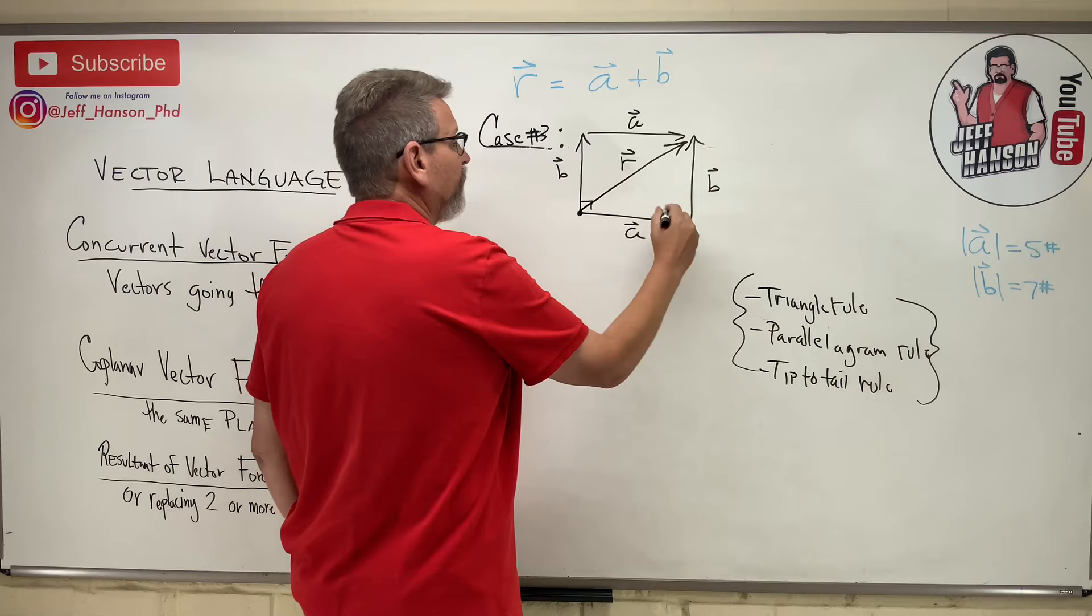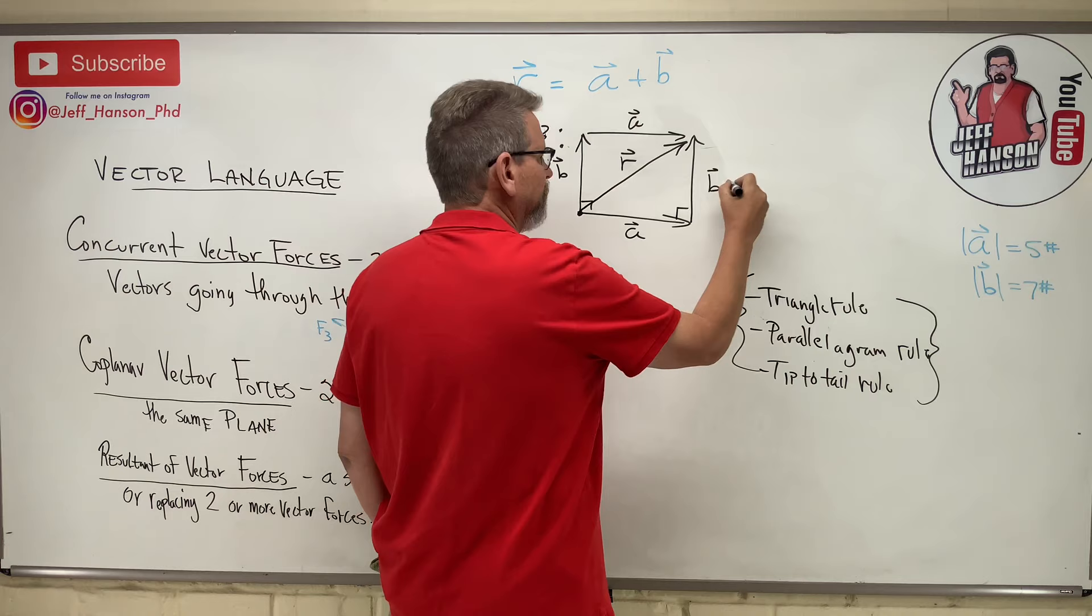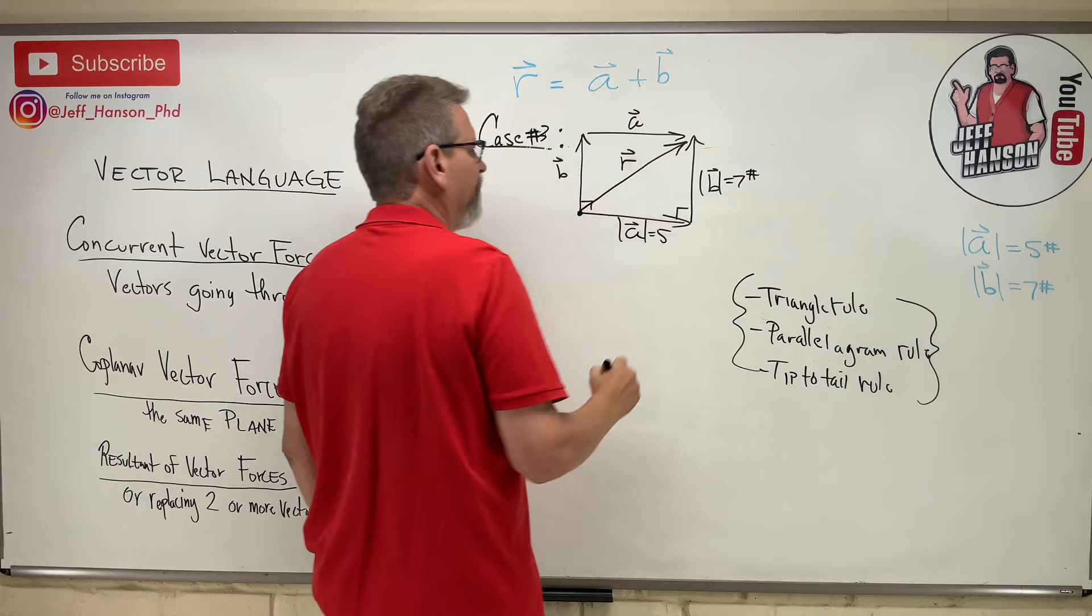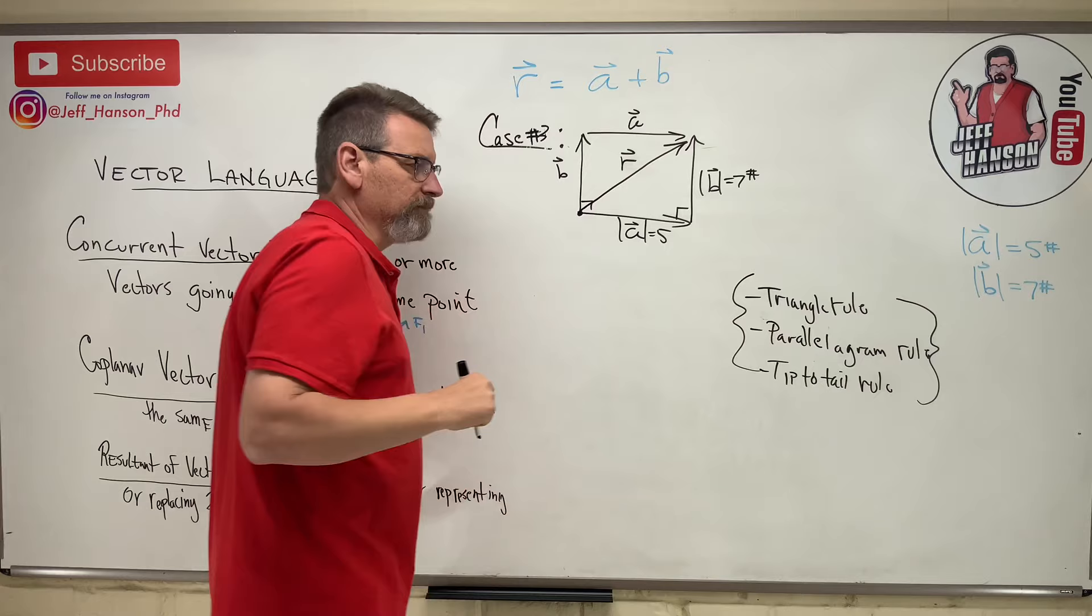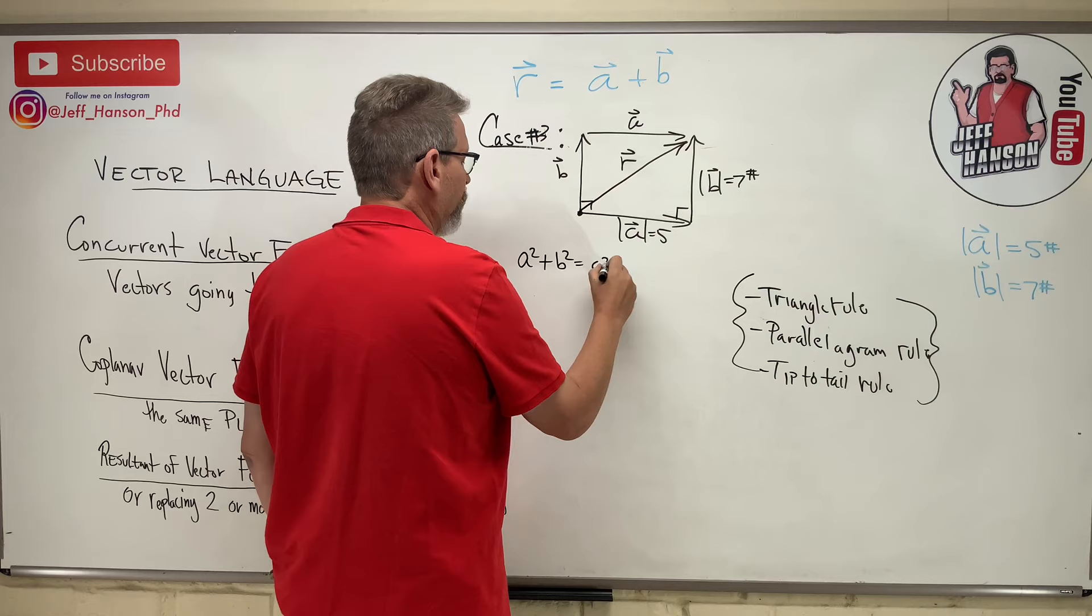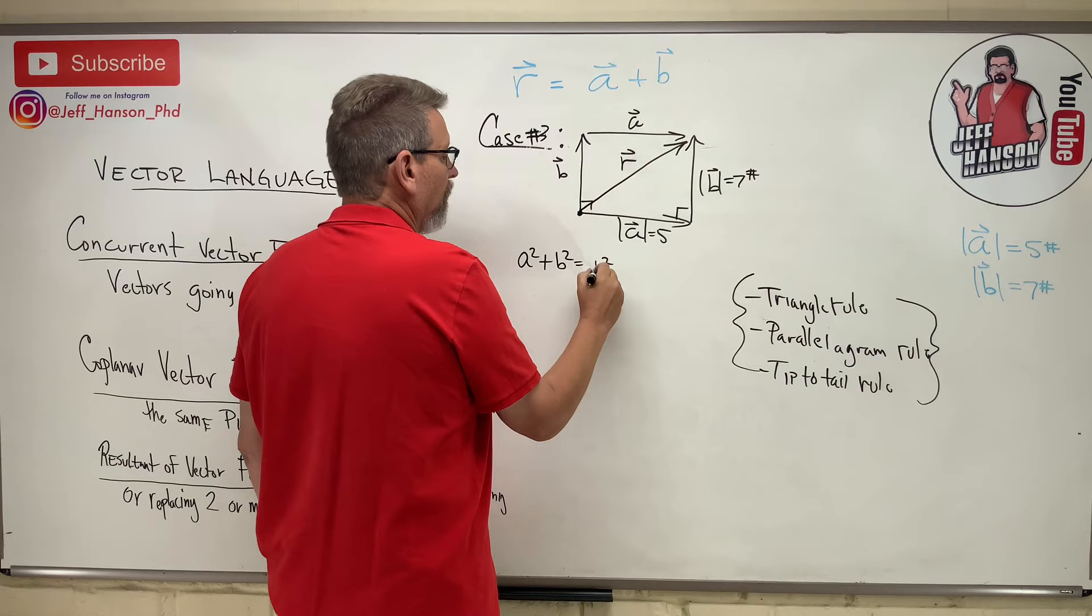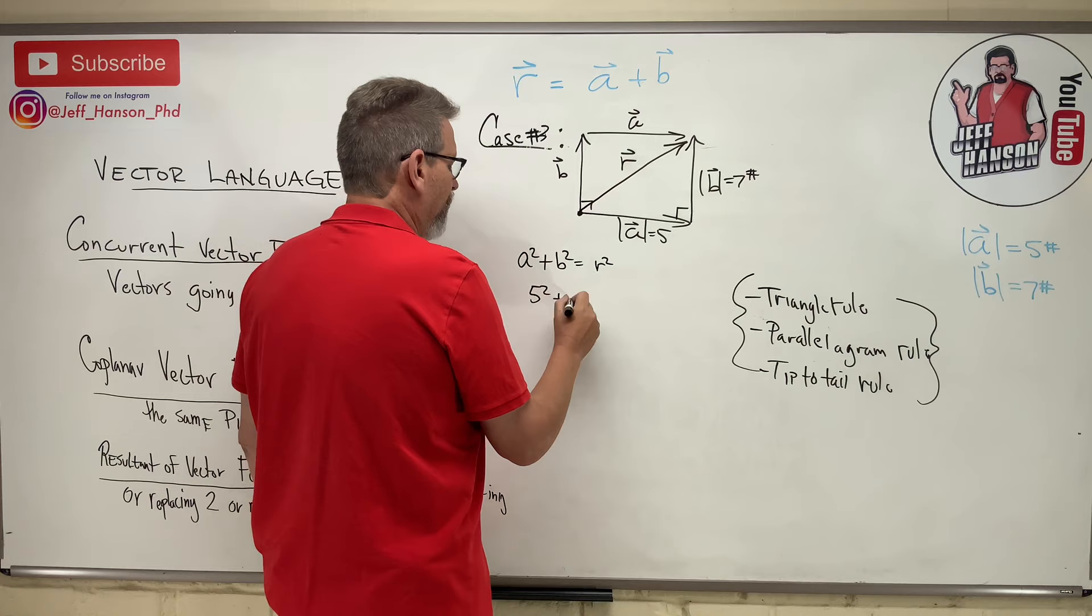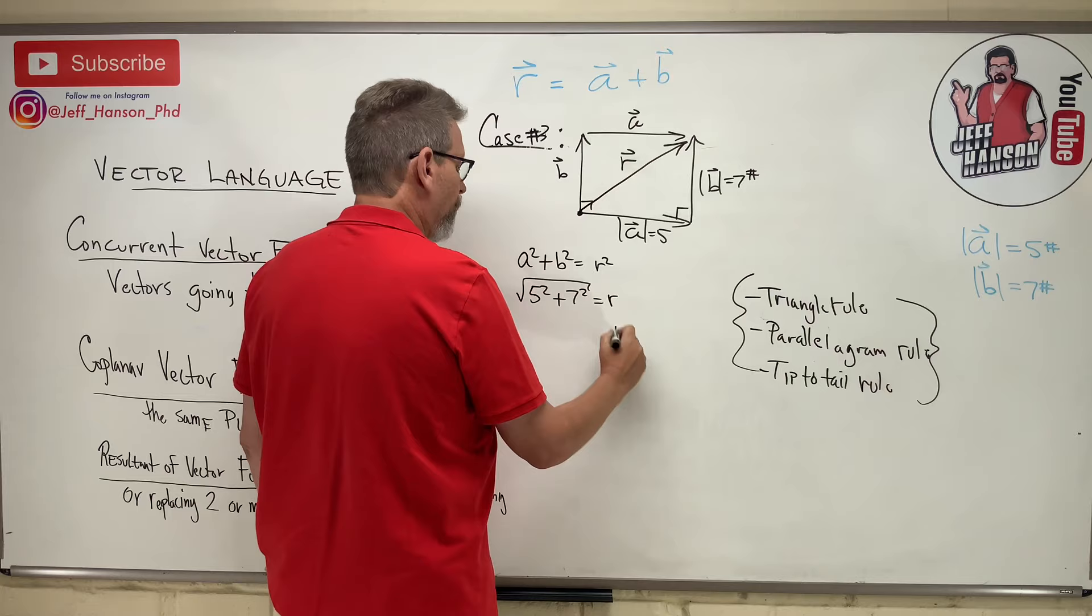So, here we go. This is a right angle, and we remember that B is 7, and A is 5. So, what do we need? We need to find out how big R is. Well, that looks like a right triangle to me, and I remember something about right triangles. I remember A squared plus B squared equals C squared, or in our case, A squared plus B squared equals R squared, doesn't it?